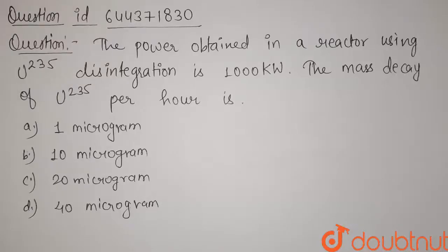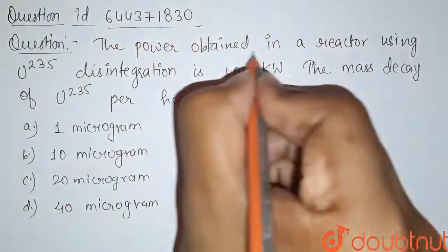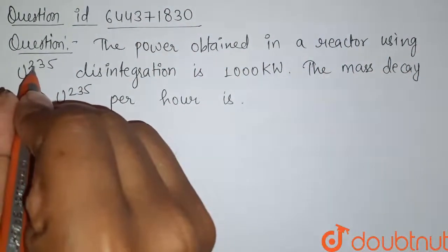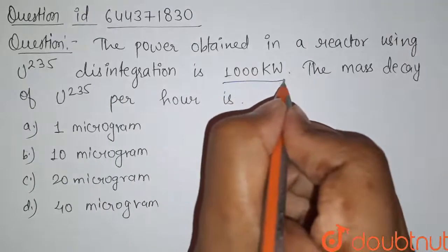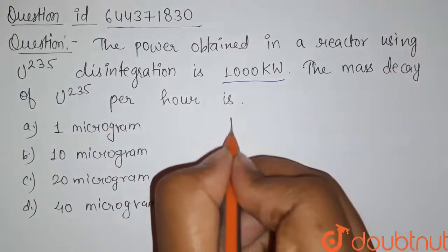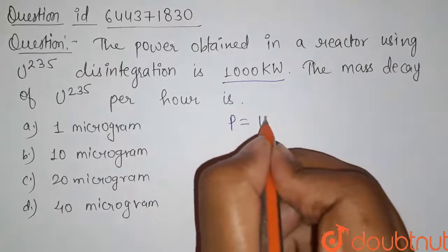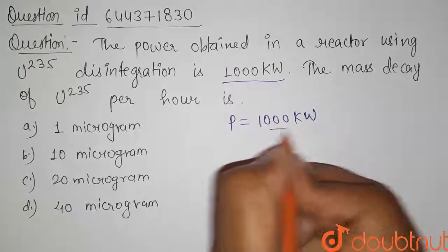Hello students, here is our question. The power obtained in a reactor using U-235 disintegration is 1000 kilowatts. So here it is given that power radiated equals 1000 kilowatts.